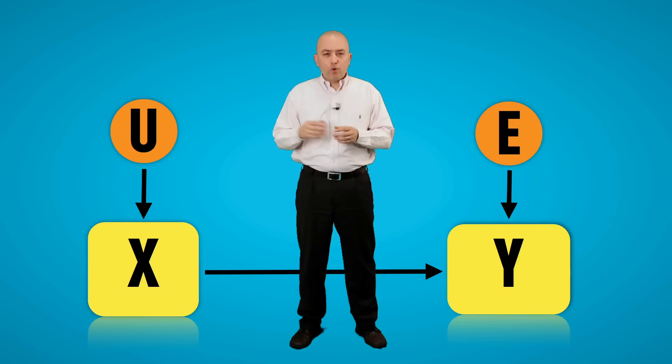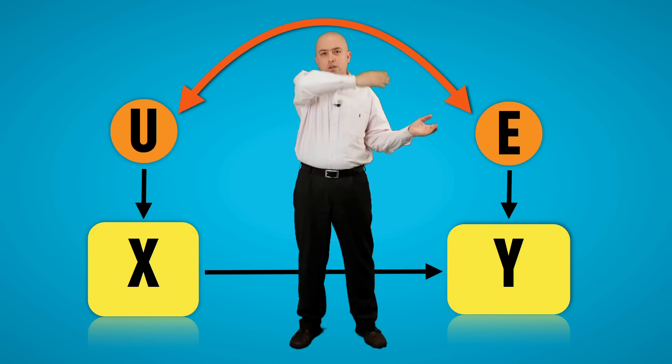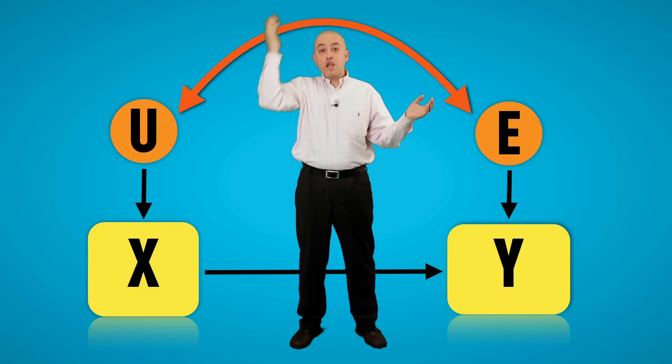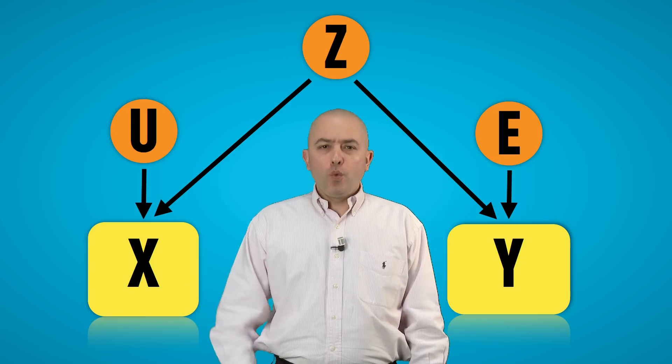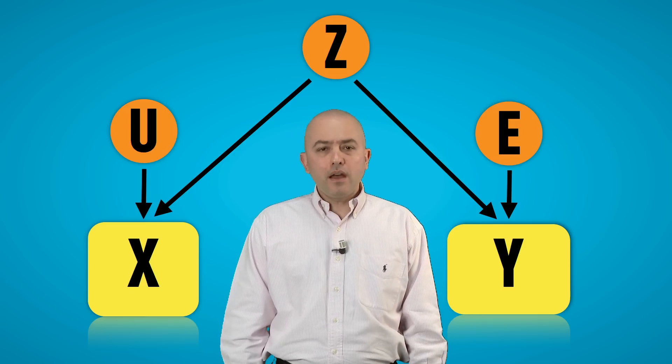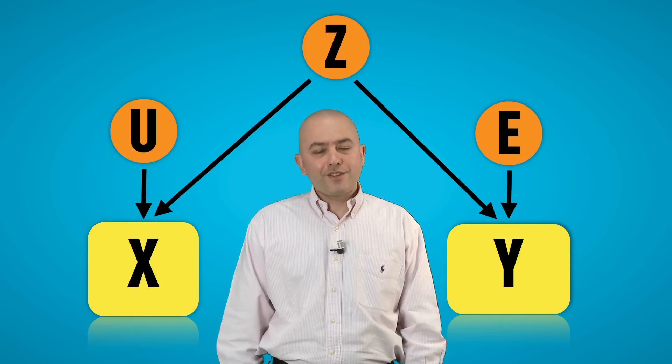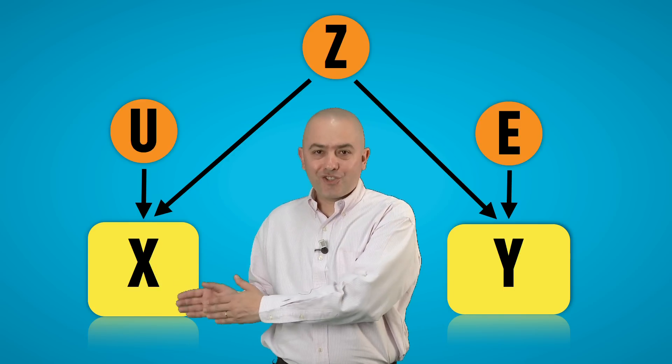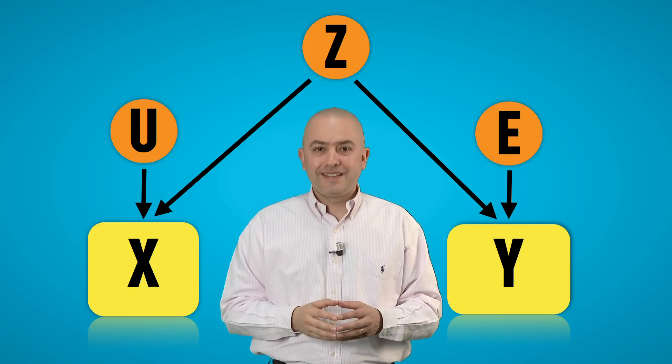Now here comes the big problem, endogeneity. What causes x might also cause y. That is, u and e, these unknown causes, may be correlated or may be due to the same variable. And this variable is what we call an omitted cause. When adding z in the model, we account for what causes both x and y. In fact, the relationship between x and y is non-existent. It is not zero.